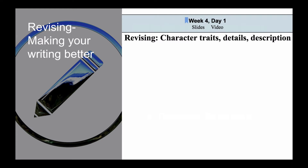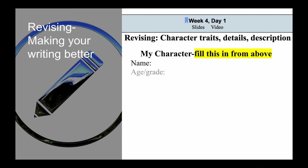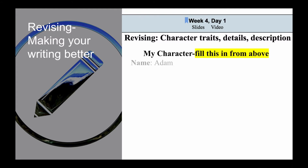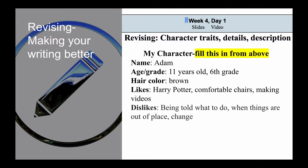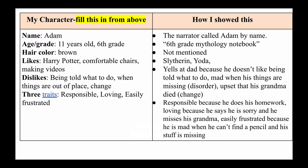We are in week four, day one. We are revising character traits, details, and descriptions. It says to fill in the chart from above — you've done this already. You know your character's name, age, hair color, all the likes, dislikes, and three character traits. Mine kind of looks like that — you've seen all of my information about Adam before.